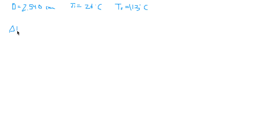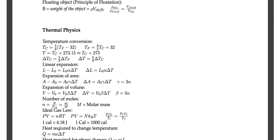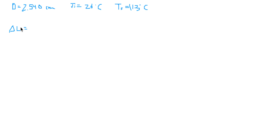Delta L, change in length, is equal to L₀ × α × ΔT. We have the initial temperature and the final temperature, so we can calculate the change in temperature by taking the final, 113, minus the initial, 26. We end up getting a temperature change of 87 degrees Celsius.